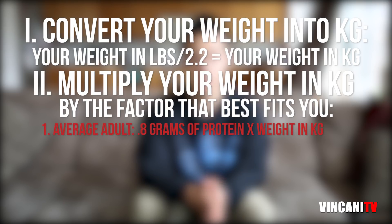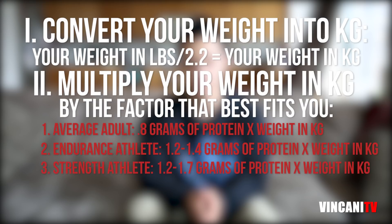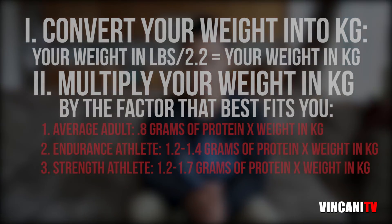For an adult athlete, you would need more. For endurance training, 1.2 to 1.4 grams of protein per kilogram body weight. For strength and power athletes, 1.2 to 1.7 grams of protein per kilogram body weight. If you don't know where to start, you can use the least amount and slowly build up to the amount that your body needs.